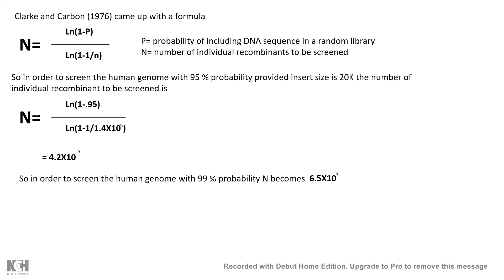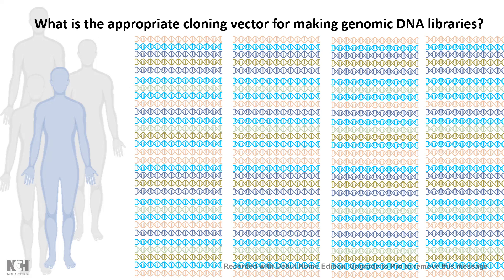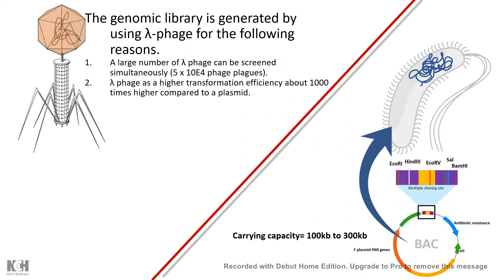The next question is: what vector is appropriate for making a genomic DNA library? Two options exist. Lambda phage-based vectors are easy to screen — thousands of lambda phage vectors can be screened simultaneously and their transformation efficiency is high. Bacterial artificial chromosomes (BACs), in comparison, have a much higher carrying capacity, making cloning of bigger fragments easier in BACs. Both approaches can be used.